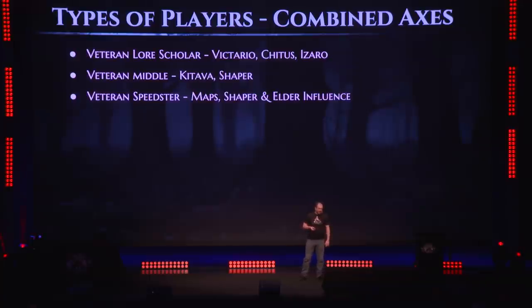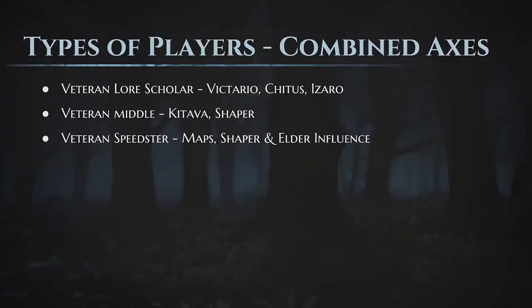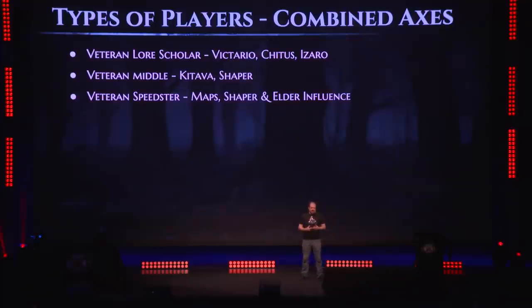As people get towards the end of the game, for lore scholars we've got deep, expansive arrays of backstory pieces — Victario, Chittis, Cesario, the whole story about what happened in the past. Most people aren't even aware of the Eternals, the Vaal, everything before — but lore scholars love it. The veteran average player is fighting Kitava and the Shaper — we're bringing them payoffs to what's happened before. Veteran speedsters are about the maps, Shaper and Elder influence — an interesting choice because the influence mechanic is tied to the characters of the Shaper and the Elder and gives maps features of those bosses, so speedsters still absorb some of what they're seeing.